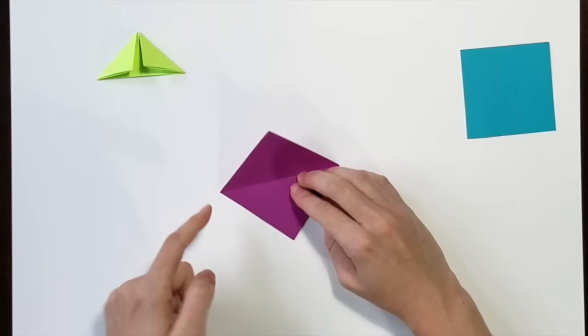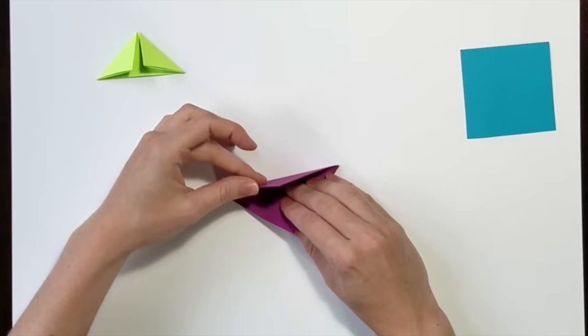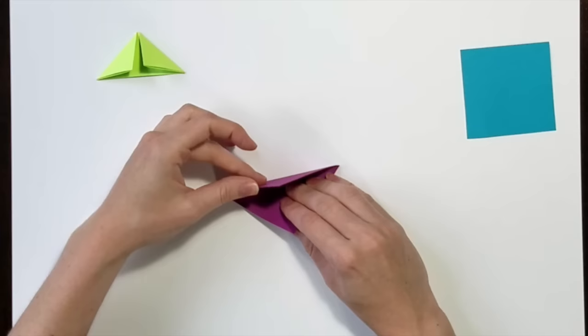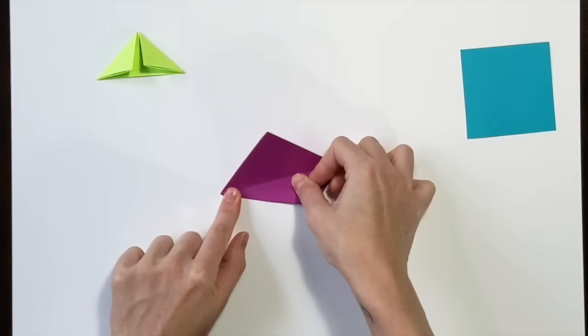What I want to do is take this side right here and line it up to the middle line. I like kind of holding this up a little bit because it helps me to make my fold a little bit cleaner. Kind of helps like a little ruler for me.